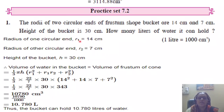Radius of the circular end R1 is 14 cm. Radius of other circular end R2 is 7 cm. Height of the bucket is 30 cm. Write down all the given things and then find out volume of water in the bucket, which is same as volume of frustum of cone. How many liters of water it can hold, you have to calculate.